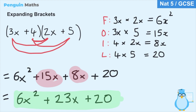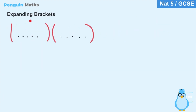Using the FOIL method — first, outside, inside, last — we've expanded these brackets to get 6x squared plus 23x plus 20. To emphasise this again: when we have a group of terms within the same brackets we have to treat them as one and manipulate them as a single term altogether. That's why when we expand we must multiply everything in one bracket by everything in the other, because all terms in the same bracket are treated together.